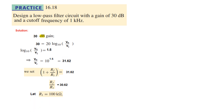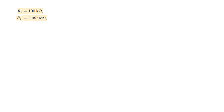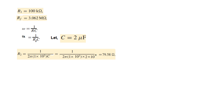We assume a value of R1 — let's take R1 as 100 kilohms. Therefore RF will be 30.062 megohms. This value of R1 is arbitrary; we could have selected 10 kilohms or 1 kilohm and the resistances would be in a lower range. Now for the corner frequency: the required cutoff frequency is 1 kHz. We assume a capacitance of 2 microfarads and plug into the corner frequency formula. R2 comes out to be 79.58 ohms.